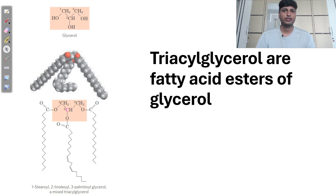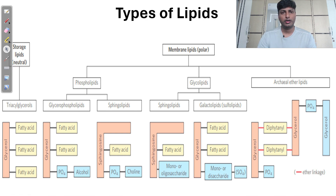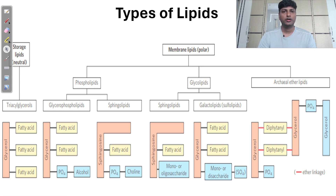So storage lipids — whether monoacyl, diacyl, or triacylglycerol — are all fatty acid esters of glycerol. In triacylglycerol, the glycerol backbone has three fatty acids attached. The other type of lipids present in cells are membrane lipids, present in cell membranes. These can be phospholipids: in a phospholipid, the main backbone is again glycerol with two fatty acids, but on the third carbon there is a phosphate group instead of a fatty acid.